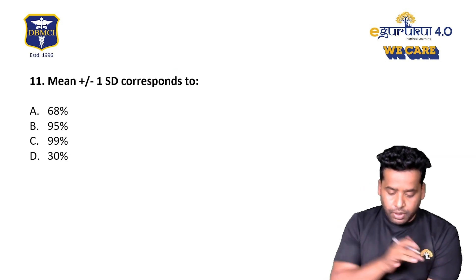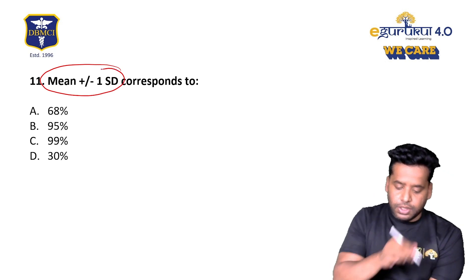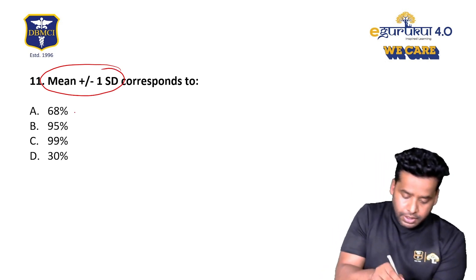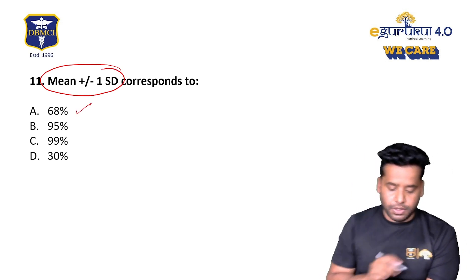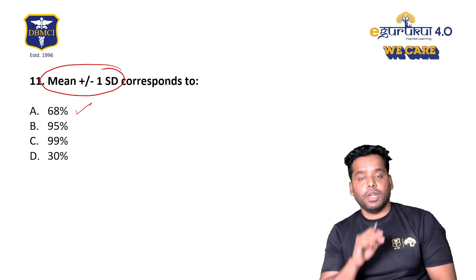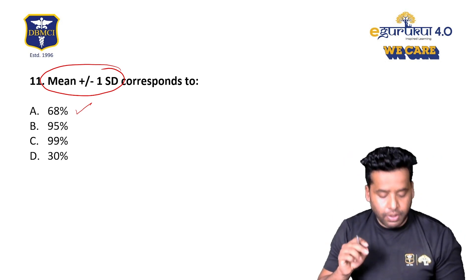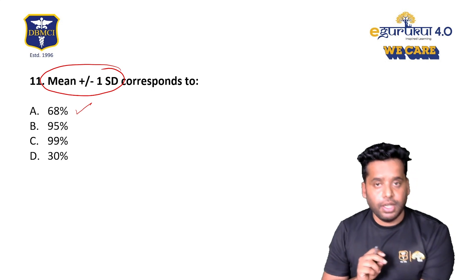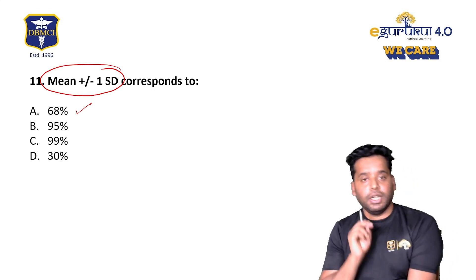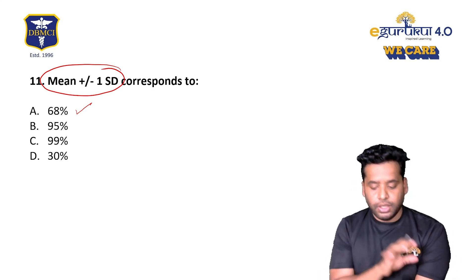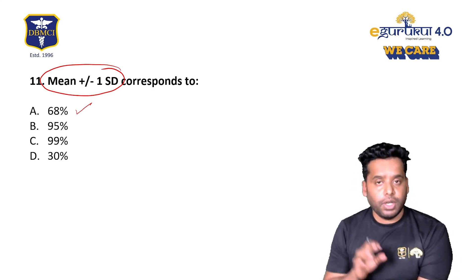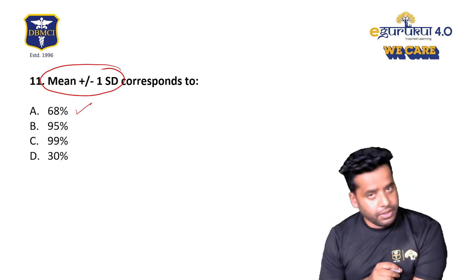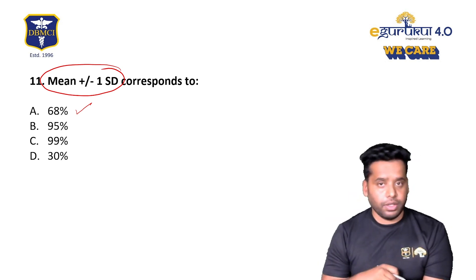In a normal distribution, mean ± 1 standard deviation covers 68%, mean ± 2 standard deviations covers 95%, and mean ± 3 standard deviations covers 99%. These are important recall-based questions in your INICT exams. Thank you so much.